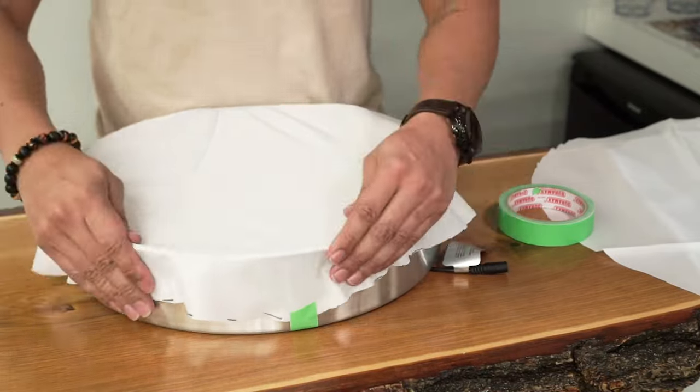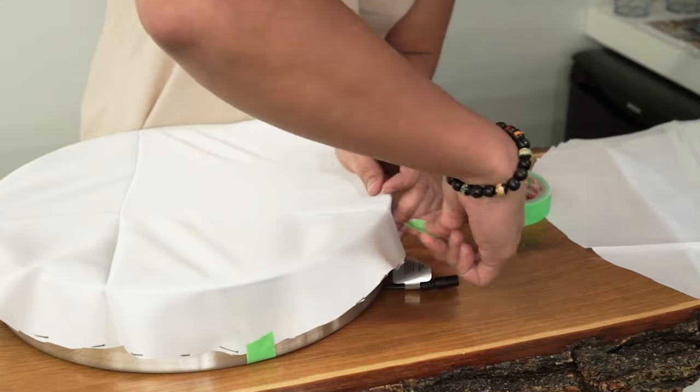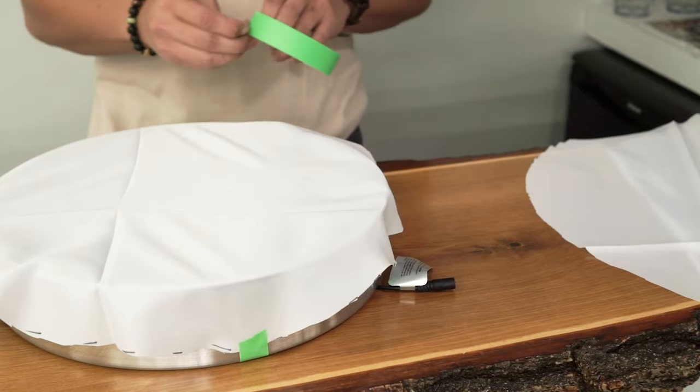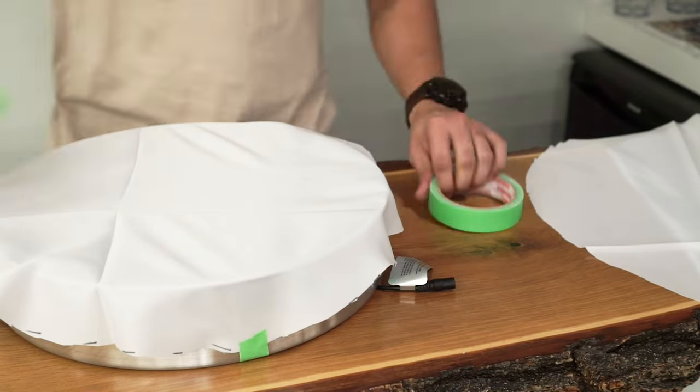These elastics or zip ties will ensure the diffusion sheets are held tightly in the front of the cake pan, emulating the soft box look that we're going for.